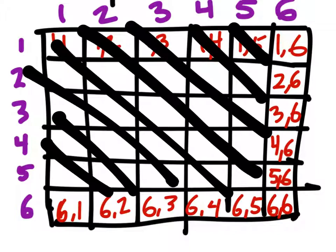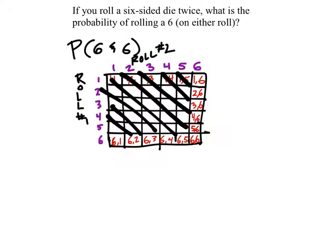So, you know, it depends on how you think about it, right? All right. So to finish this off, since it says you can roll a six on either roll, we're going to assume that having both sixes there is okay. So we're going to say that this spot is included.